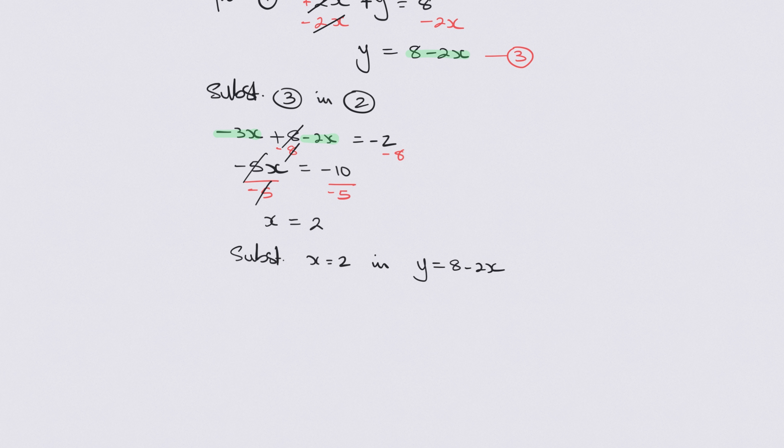It means I'm going to take this 2 and replace this x over here with that 2. So y will equal 8 take away 2 times 2. So 8 take away 4 which is 4 and then there we have our solution: x equals 2 and y equals 4. Absolutely amazing.